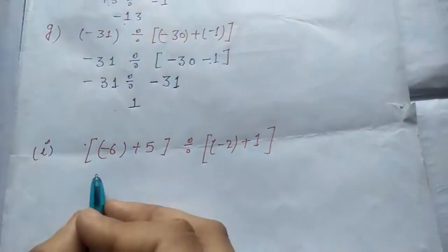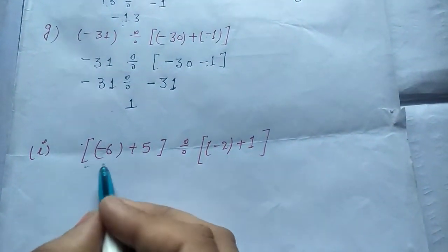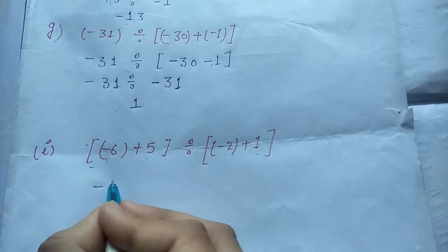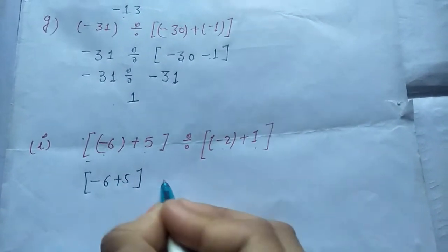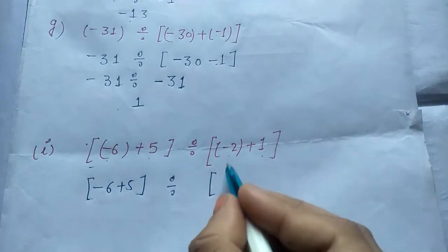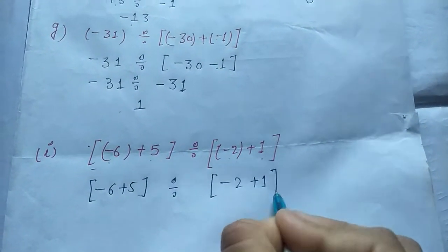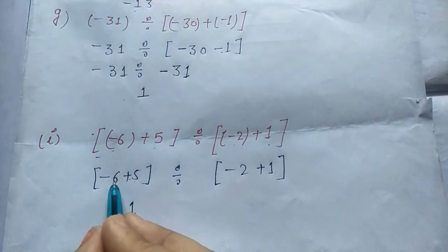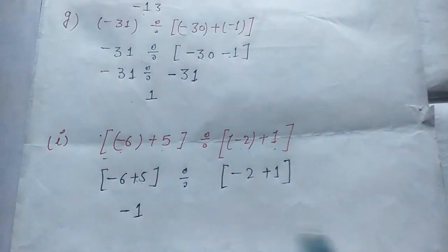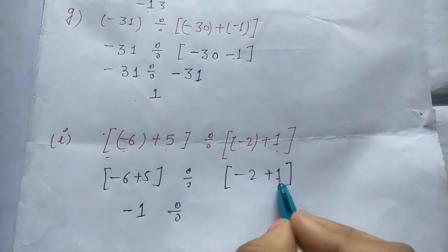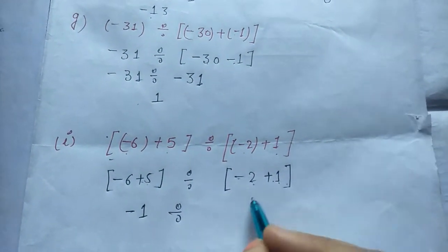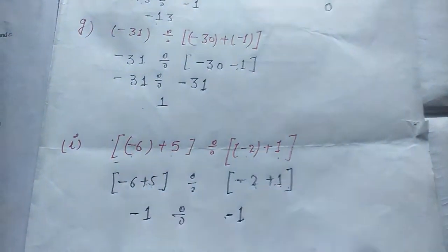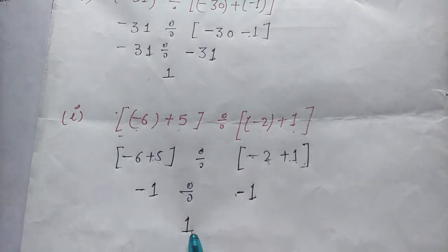Now part I — there are two brackets: bracket minus 6 plus 5, and bracket minus 2 plus 1. Firstly we solve the first bracket: minus 6 plus 5 — minus plus is minus, 6 minus 5 is 1, and 6 is the greater number, its sign is negative, so the answer is minus 1. Bracket minus 2 plus 1 — minus plus is minus, 2 minus 1 is 1, and 2 is negative greater number, so the answer is minus 1. Minus 1 divided by minus 1 — minus minus is plus, so the answer is plus 1.